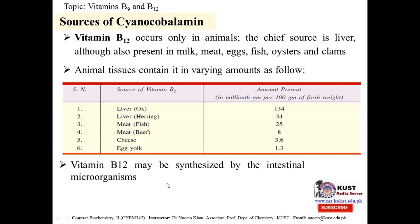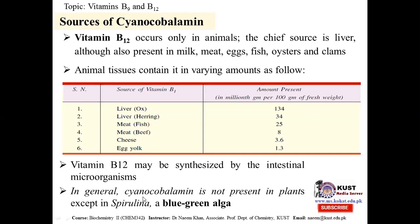Vitamin B12 may also be synthesized by intestinal microorganisms. Generally, cyanocobalamin is not present in plants, except in spirulina of blue-green algae — the only plant species that may contain this vitamin.